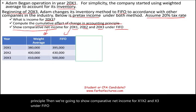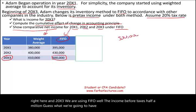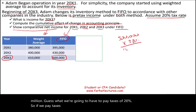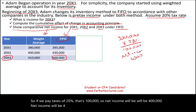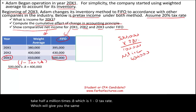Let's start with the first question: what is net income for 20x3? In 20x3 we are using FIFO, and the income before taxes is $500,000. We pay taxes of 20%, which is $100,000, so net income will be $400,000. Another way to compute this is to take $500,000 times 0.8 — which is 1 minus the tax rate — giving you the same answer of $400,000. That's the answer for the first question.